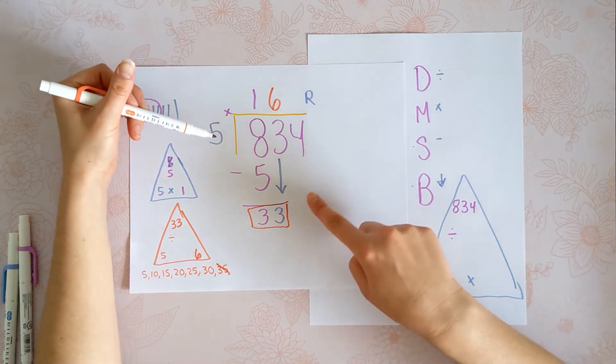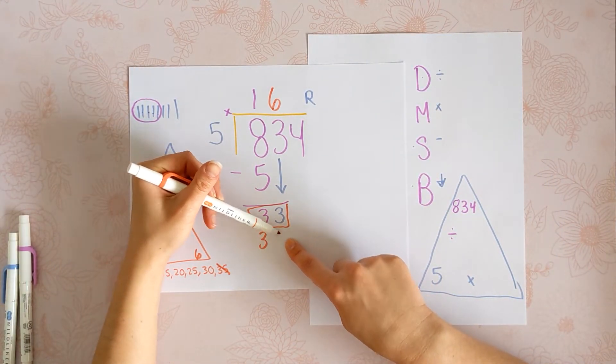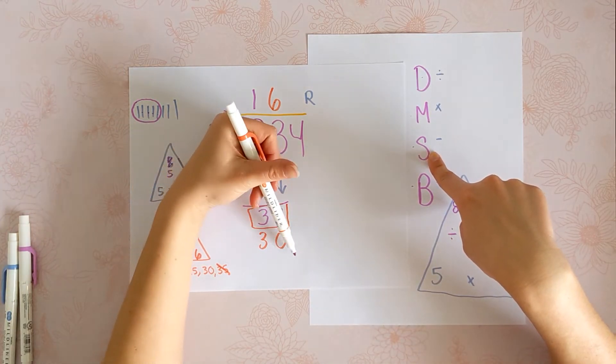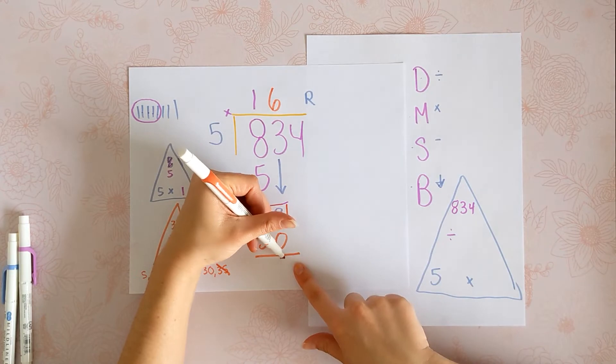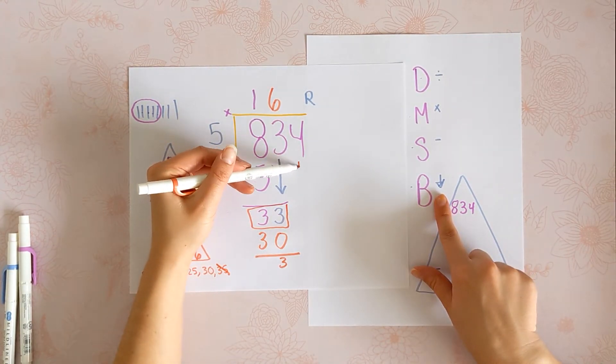Multiply. 6 times 5 is 30. Now you're going to subtract. So 6 times 5 is 30 with 3 left over. And then we're going to bring down our 4.